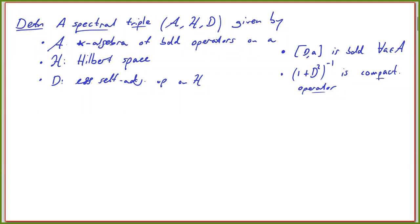And then there is an essentially self-adjoint operator D on a suitable domain in H. There are two conditions: the commutator of D with A extends to a bounded operator on the Hilbert space, and furthermore the resolvent — one plus D squared to the minus one — is compact. That tells me something about the eigenvalues: the eigenvalues of D go to infinity in the infinite-dimensional case.